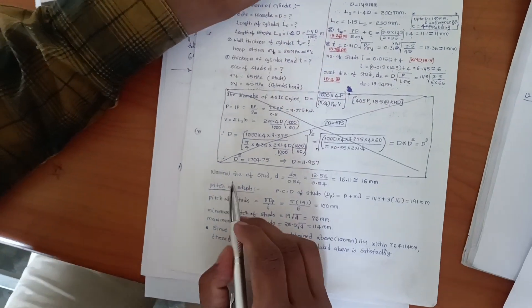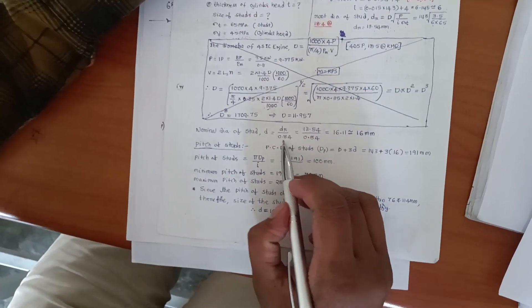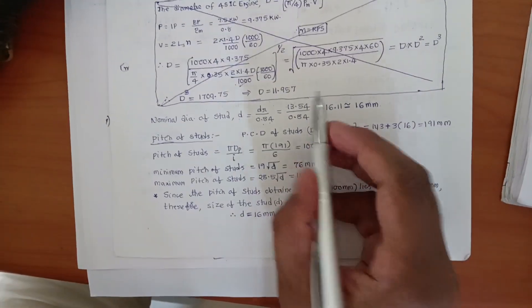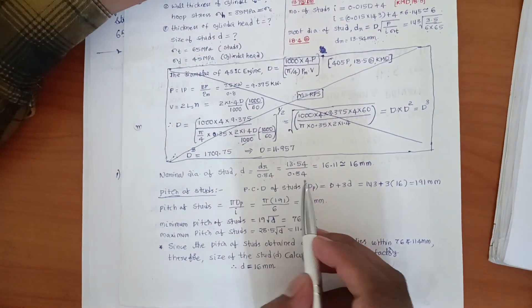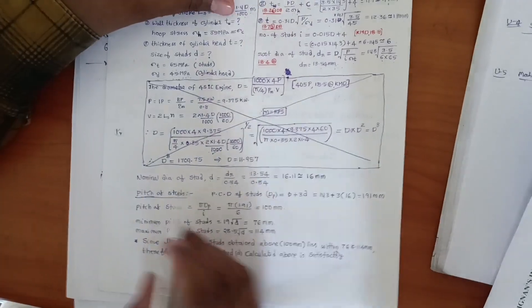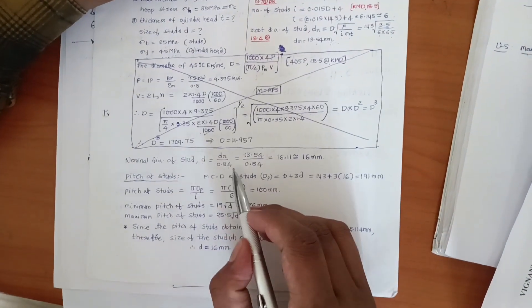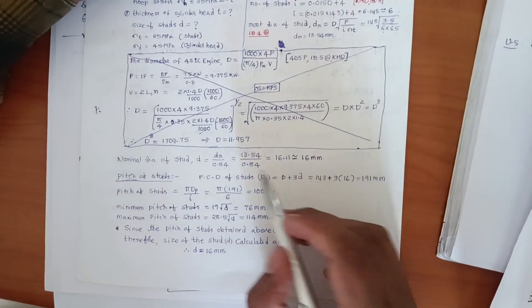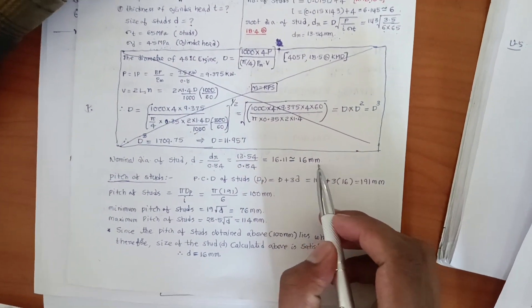From the root diameter, we find the nominal diameter using the formula: D_nominal equals d_r divided by 0.84. Substituting 13.54 / 0.84, we get the nominal diameter approximately 16.11 mm, which rounds to 16 mm. So the nominal diameter of the stud is 16 mm.